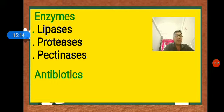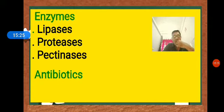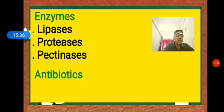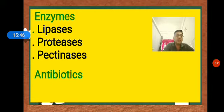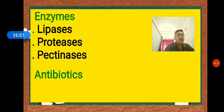More than five thousand antibiotics are known today, but only about a hundred are in medicinal use. There are two types: broad spectrum antibiotics, which kill or destroy different groups of pathogens such as bacteria, viruses, and protozoans; and narrow spectrum antibiotics, which kill or destroy only a specific type of pathogen.